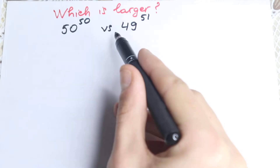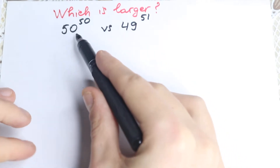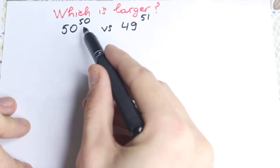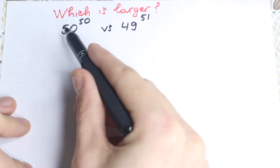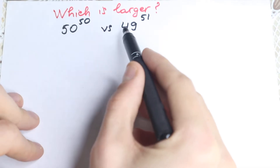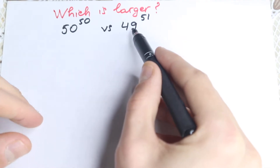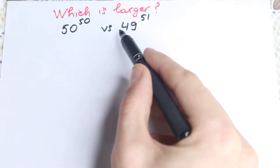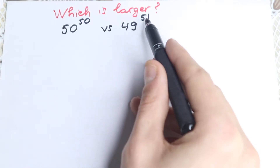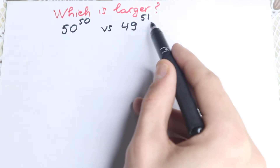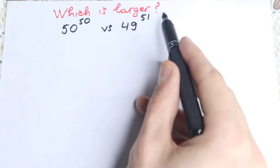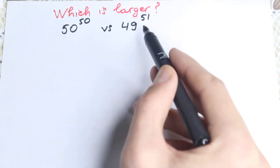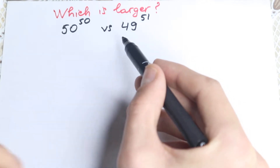On the face of it we cannot easily say which one is larger. On the left hand side, on the right hand side, maybe we can simplify this — on the left hand side two same numbers, but what about our right hand side? 49 is a really bad number, it's odd, and 51 we cannot express as a product either. Both are different, so this is a really hard question.